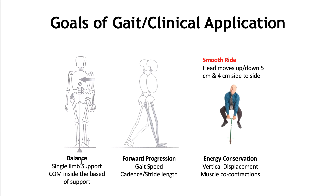The balance challenge comes during single-limb support, which is often involved in neurologic and gait problems when people have weakness — shown here in the frontal plane. Forward progression is all about gait speed, achieving adequate cadence combined with stride length to be successful. Energy conservation is about how smooth a ride we give the passenger — how smooth a ride we can give the trunk. Normal gait produces vertical movements of the head of around 5 centimeters and side-to-side movements of around 4 centimeters, which is a pretty smooth ride.